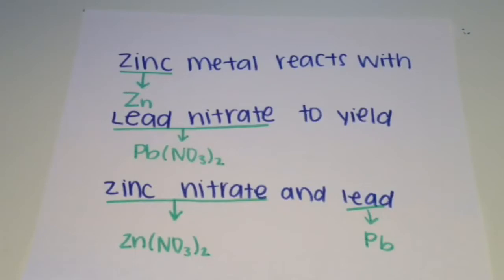Zinc can be written as Zn and lead nitrate can be written as Pb(NO3)2. Zinc nitrate is Zn(NO3)2 and lead is Pb.